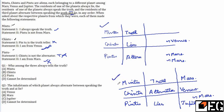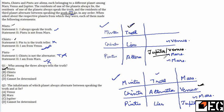Moving to the questions: the first question asks who always tells the truth. Mintu is the truth-teller in both Case 1 and Case 2, so the answer is Mintu. The second question asks which planet's inhabitants alternate between truth and lie. In Case 2 it is Venus, but in Case 1 we cannot determine the planet with certainty — it could be Jupiter or Venus. So the answer to the second question is D — cannot be decided.